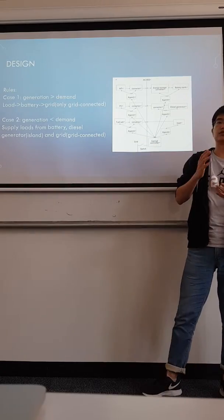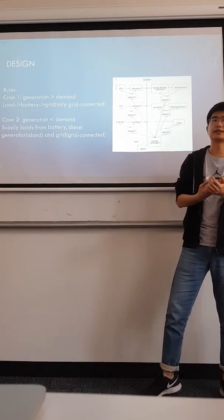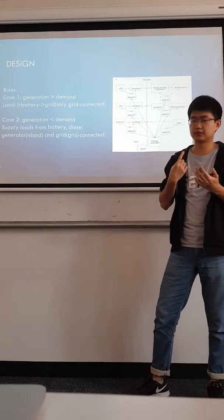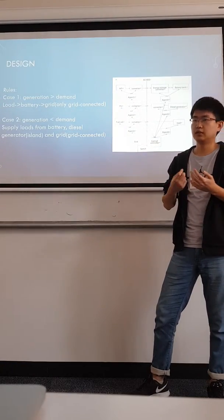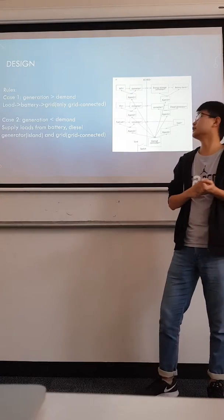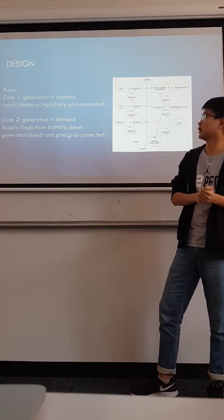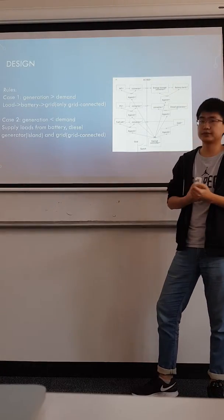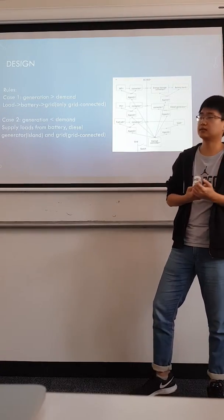Agent 2 is to control the solar generator operation based on the forecast solar radiation, temperature, and output power. Agent 3 is to control the fuel cell based on its tank pressure.